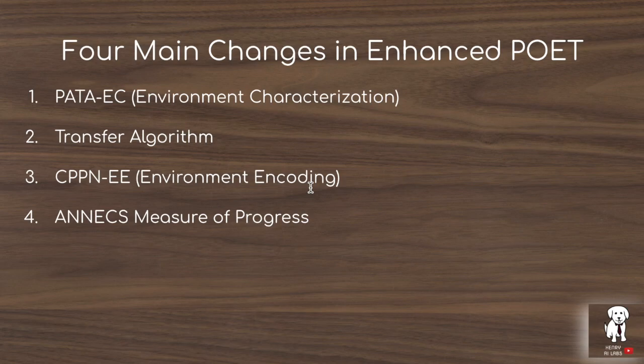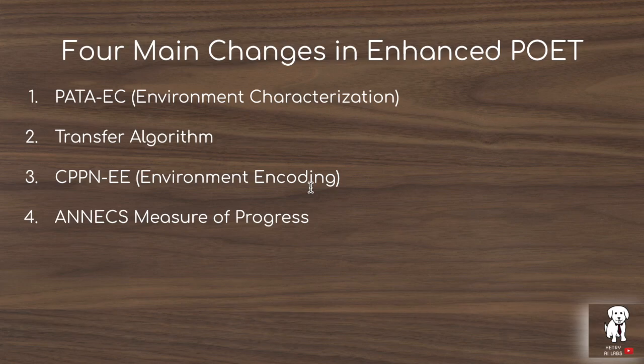The PATAEC works by evaluating whether a new environment re-ranks how well the agent population performs. If you have a current environment and a rank order of how well each agent performs, and a new environment significantly changes that rank order — say the fourth-best performing agent becomes the first and the first becomes the 25th — that's going to be identified as a genuinely new environment. So we compare environments based on how they perturb the rank order of the current agents.